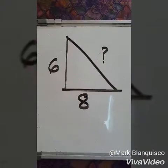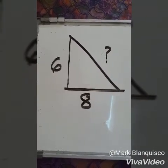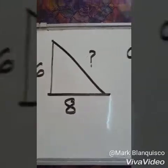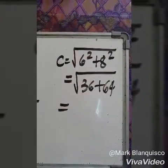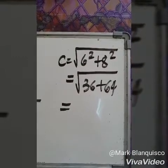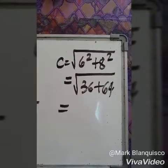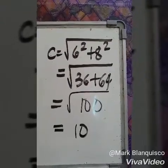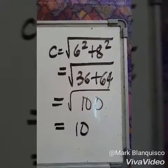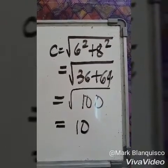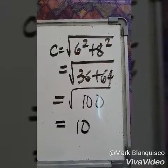Example number 1. Since the third side is missing, we are going to solve for the hypotenuse. We have C is equal to the square root of 6 squared plus 8 squared, which is equal to the square root of 36 plus 64. 36 plus 64 is equal to 100, and the square root of 100 is equal to 10. Therefore, the hypotenuse is equal to 10.